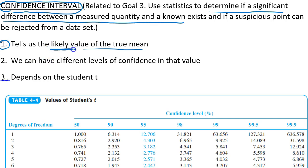And we can have different levels of confidence in this value. For example, we can be 50% confident, 90% confident, 95% confident, and so on.